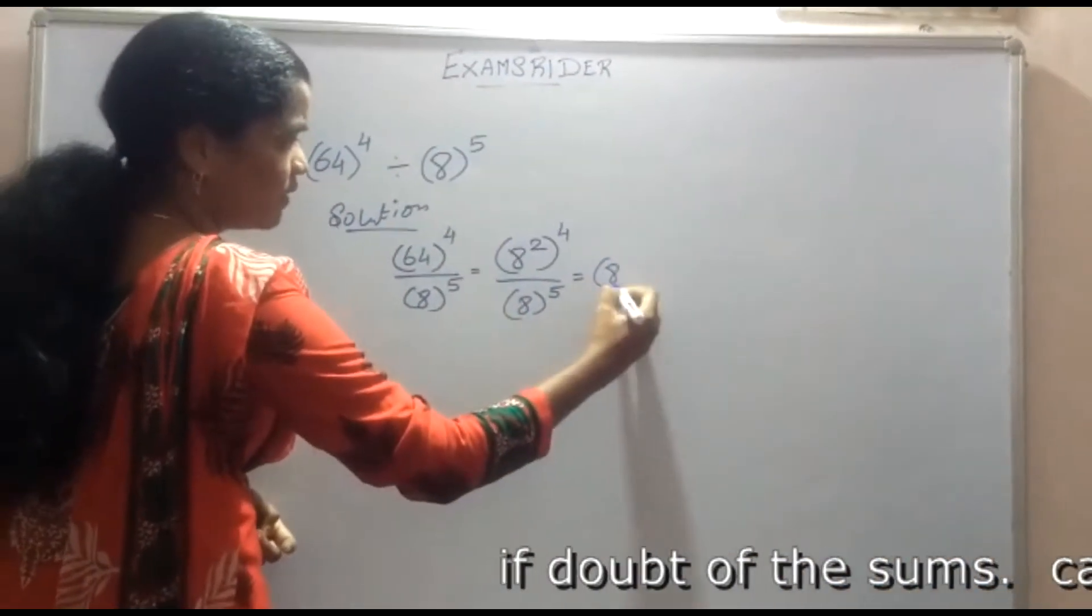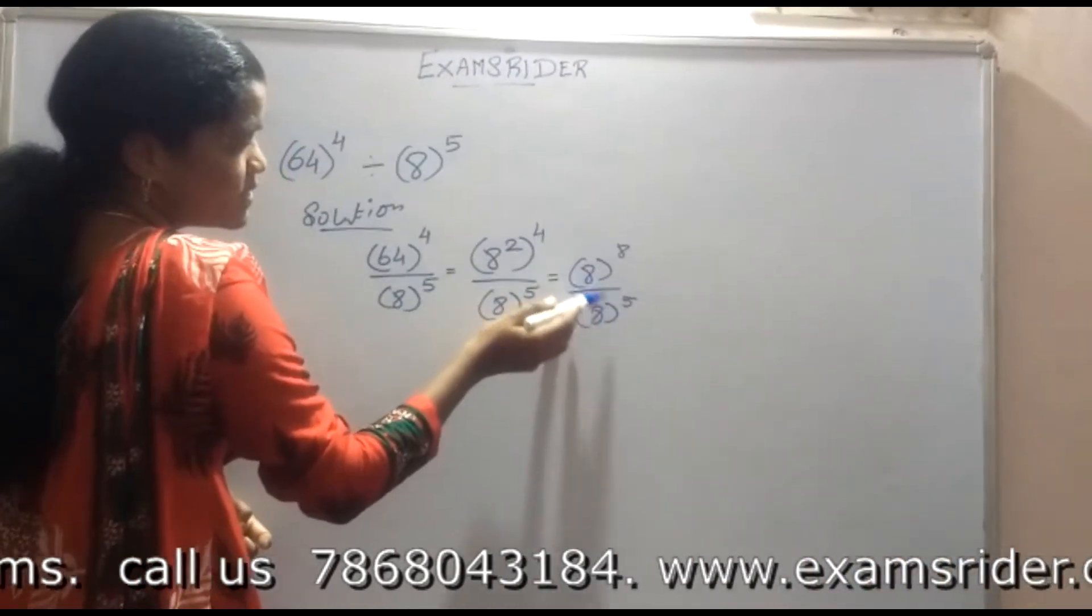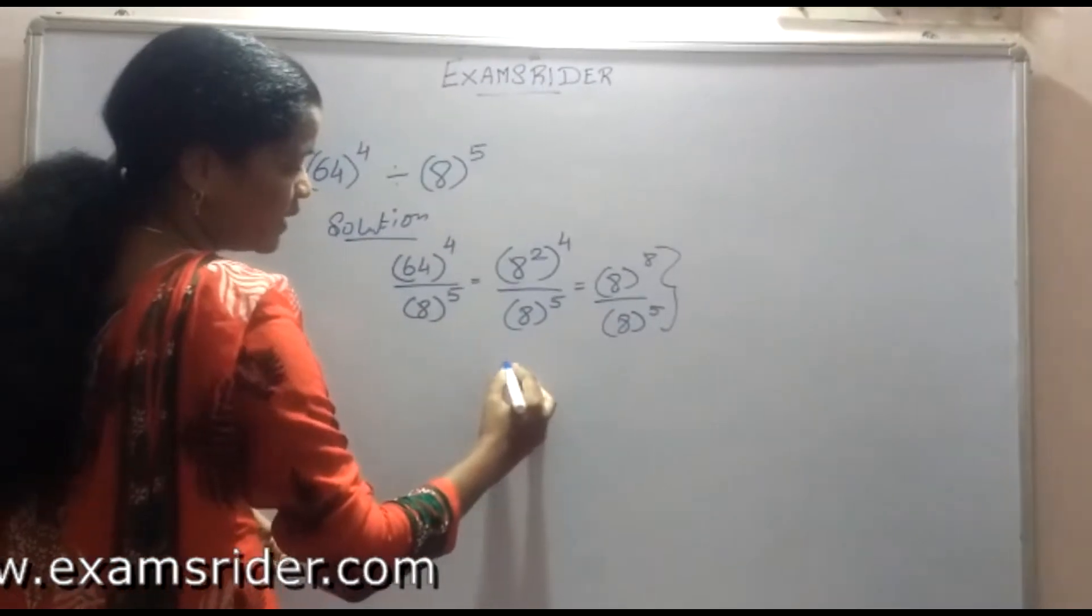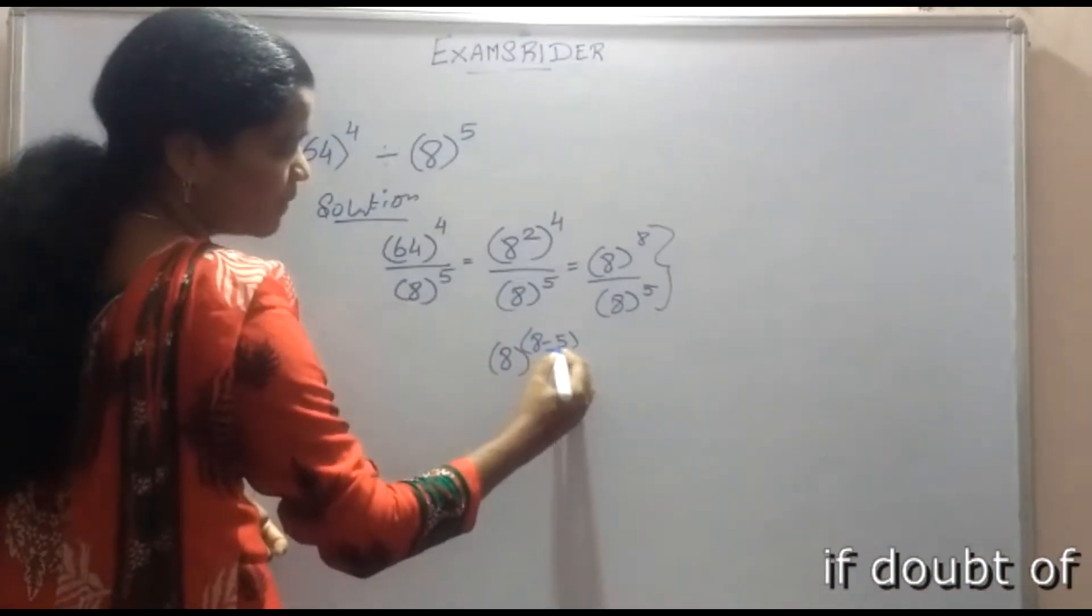8 power 8 divided by 8 power 5. If the number is same and the powers are different, we get 8 power 8 minus 5. We can use the minus symbol.